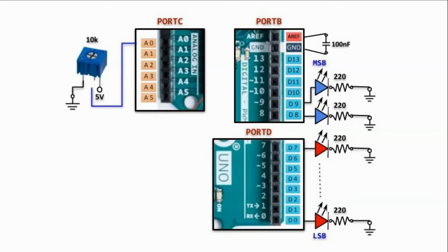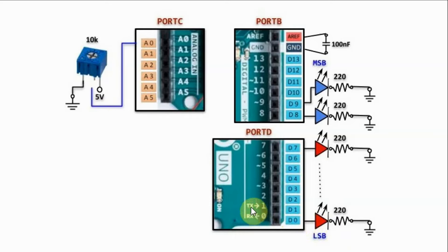A circuit diagram of the implemented system is shown here. We have a 10k potentiometer connected to pin PC0 of port C, eight red LEDs connected to eight digital pins of port D, and two blue LEDs connected to two digital pins of port B. Important note: before uploading the sketch onto the UNO, you must remove the two LEDs connected to pins RX and TX, as these pins are used during upload. Once the sketch is successfully uploaded, you can reconnect those two LEDs.